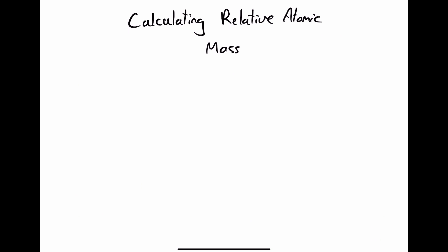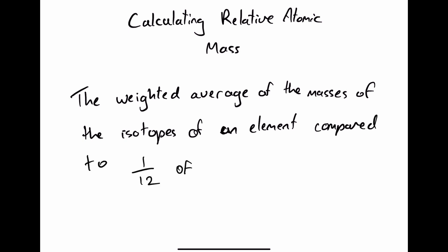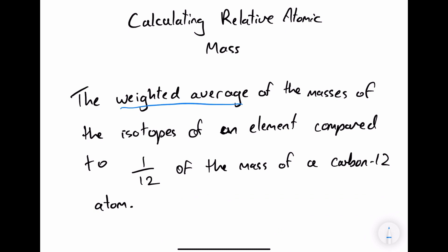Next we're going to look at calculating relative atomic mass. Relative atomic mass is the weighted average of the masses of the isotopes of an element, compared to one twelfth of the mass of a carbon-12 atom.